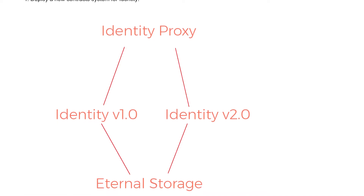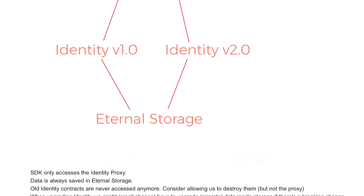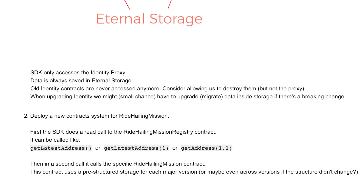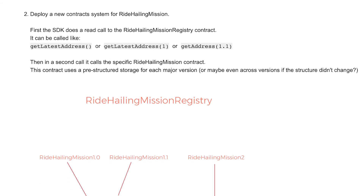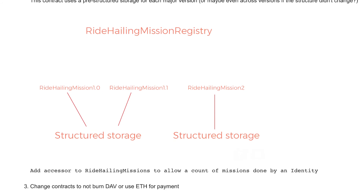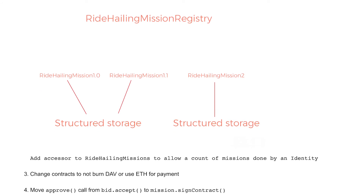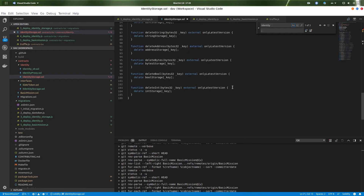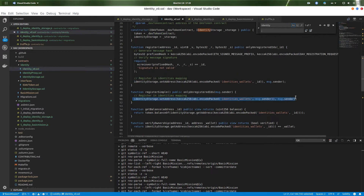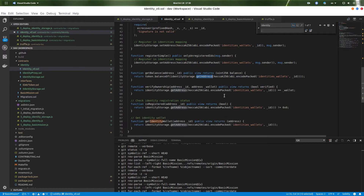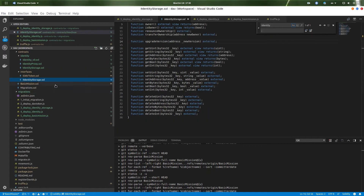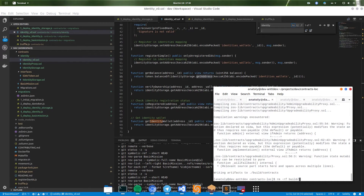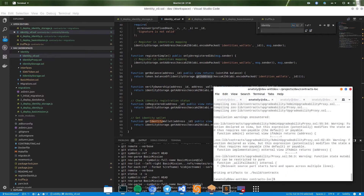Namely, that is a contract that sits between the user and between your code, and between the latest version of the contract containing the logic, so you can switch out those contracts and still access it through one address all the time. The system we've chosen is a proxy for the identity contract connected to the latest version of the identity contract, and no matter which version, they're all connected to a single eternal storage contract which will always hold all of the data, even as we upgrade the system.